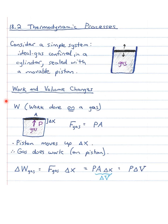This is section two on thermodynamic processes. Consider a simple system — the kind we'll ponder often: an ideal gas confined in a cylinder and sealed with a movable piston. There's the gas inside; the piston moves up and down. We could draw a handle on it — something we can manipulate by pushing it in or pulling it out. Let's talk about work and volume changes.